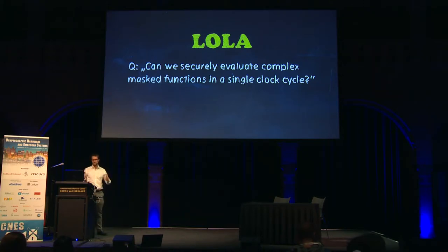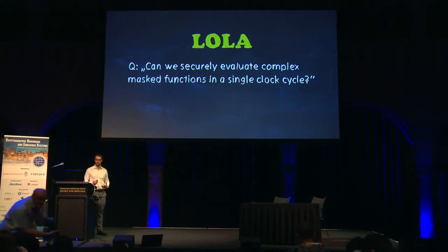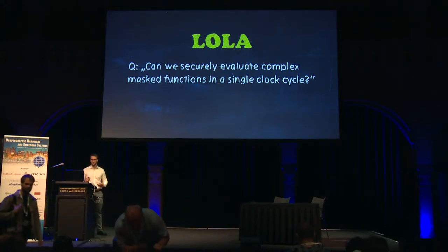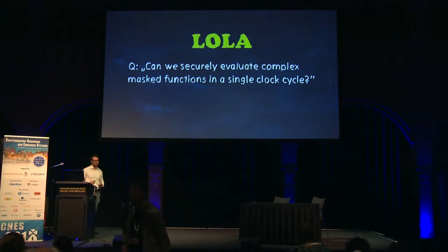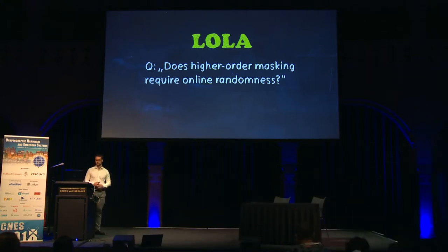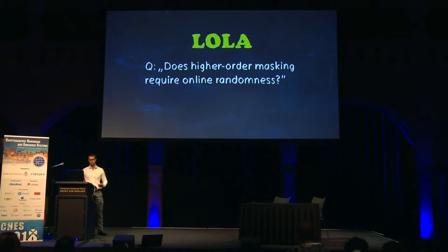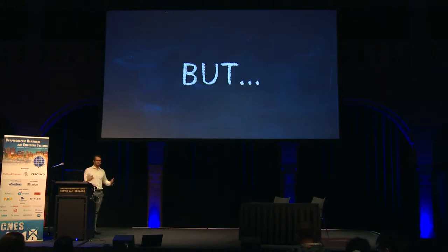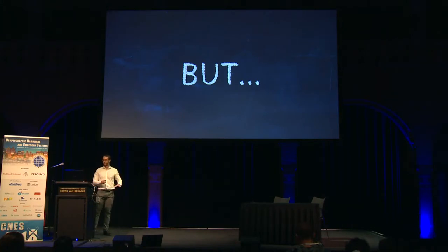The first question is: is it possible to securely evaluate a really complex masked function in a single clock cycle? And yes, we achieved this. The second question is: does higher order masking require any online randomness? And quite surprisingly, the answer to this is no. But as always when things sound just too good to be true, there's a huge caveat trailing our answers, but we'll come to that afterwards.